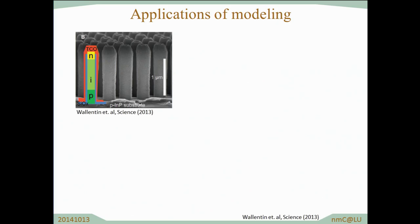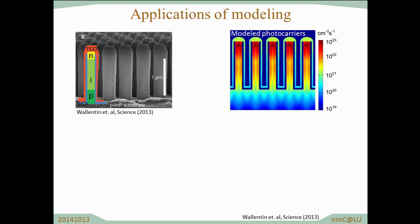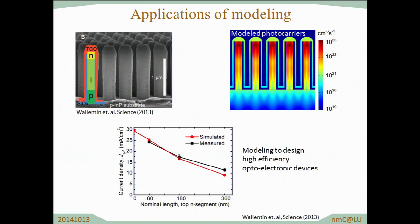As one of the applications, especially for solar cells, we have tried to study how much light is absorbed at different parts of the nanowires, from which we can extract the current that we could get out from the solar cell. You see here as the black curve the measured photocurrent for varying length of the top segment of these nanowires, and the modeled current that we can get out. We find excellent agreement, which means that we can actually use this modeling to guide us in the design of these solar cells.